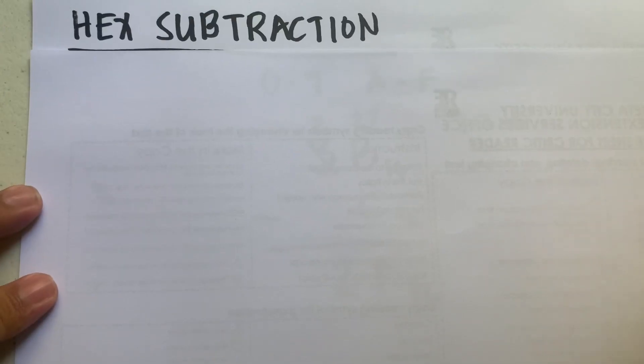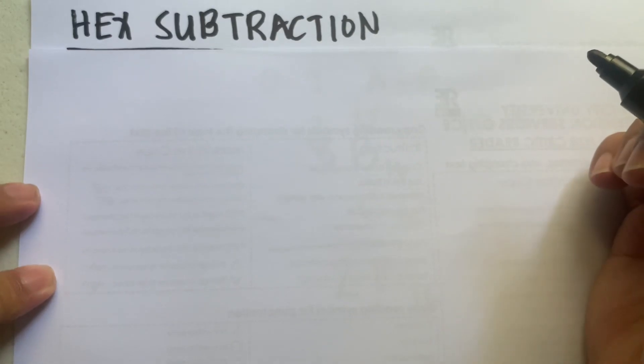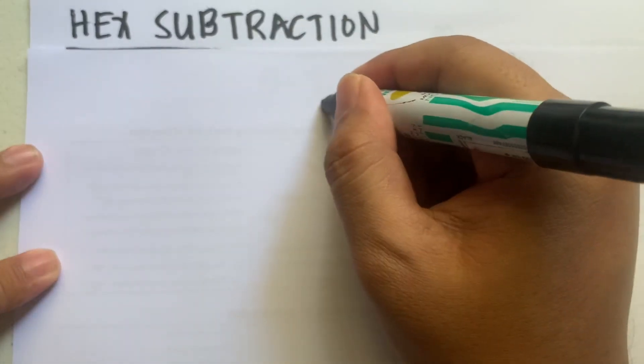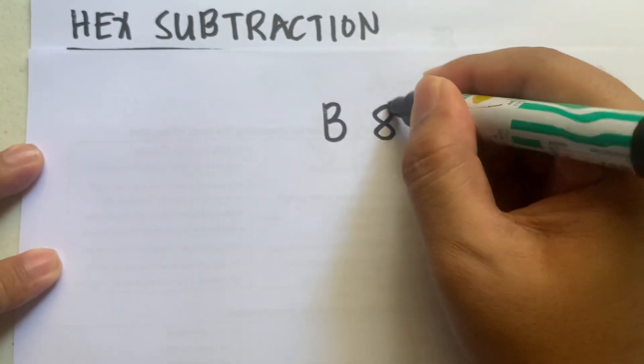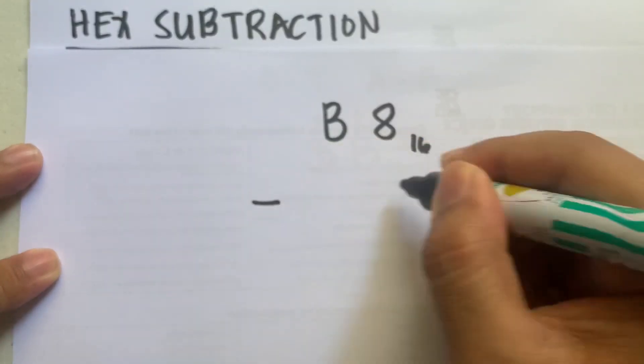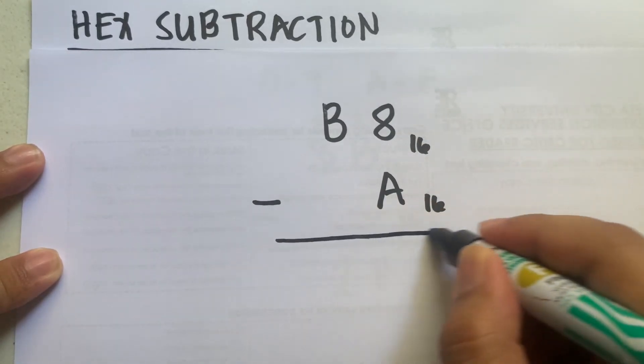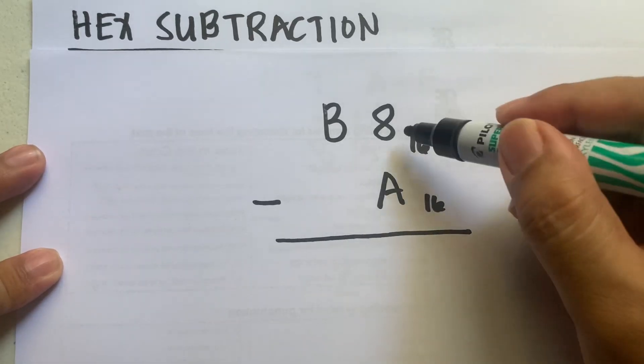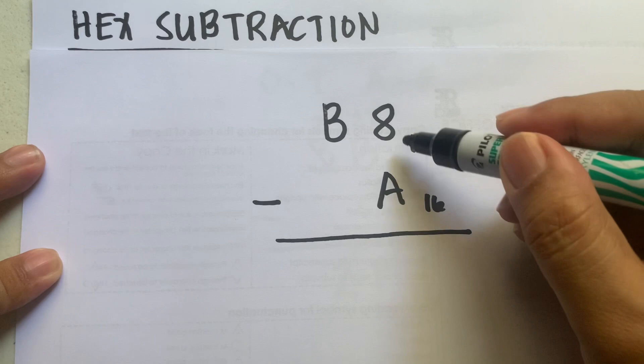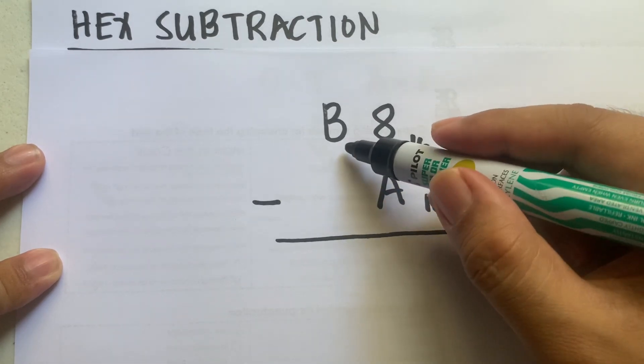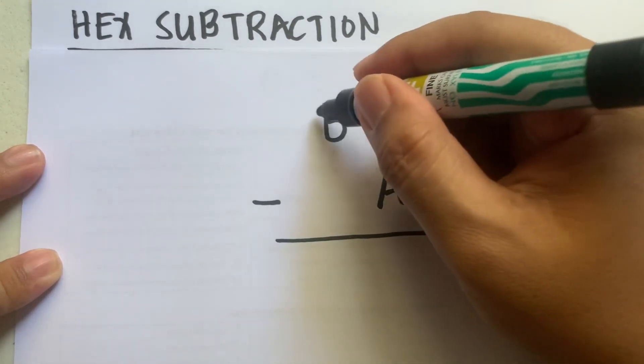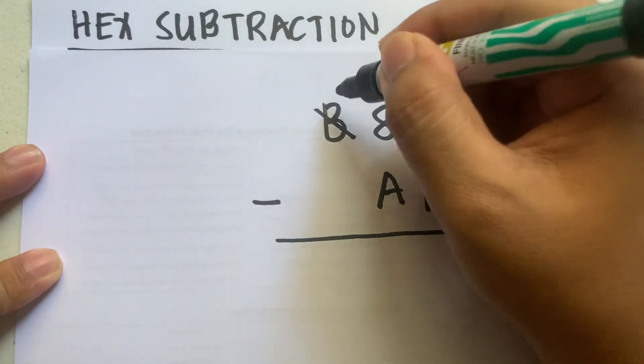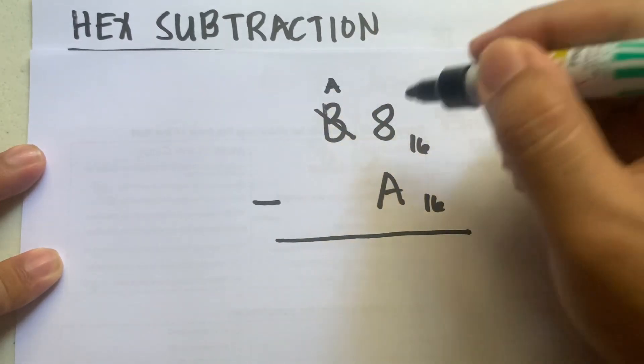Let's have an example of how to subtract hexadecimal numbers. Say you are given B8 in base 16 minus A in base 16. We have 8 minus A, which cannot be done, so 8 will borrow one from B. Since B is equivalent to 11, B now becomes A, which is 10, and 8